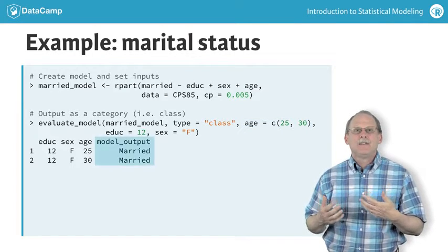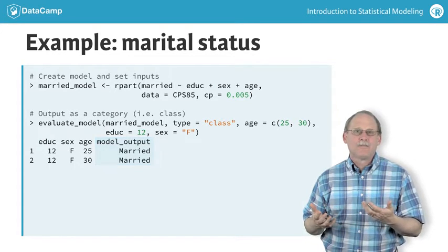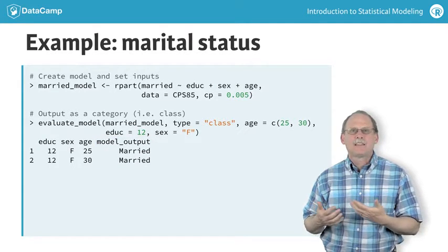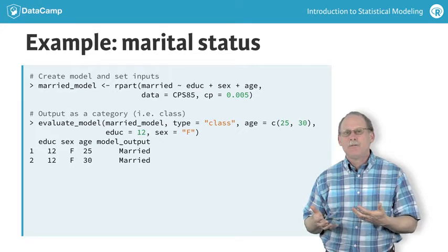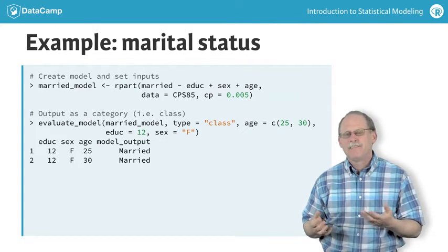As you can see, the output is the same for both ages. Does this mean that the effect size of age on married is zero? No effect of age? Not really.